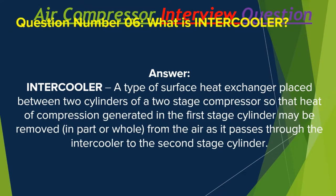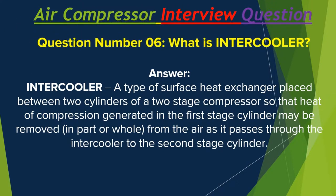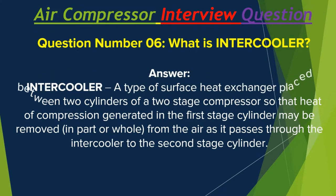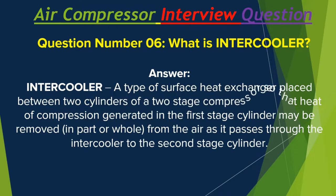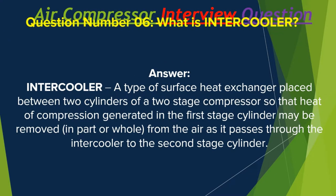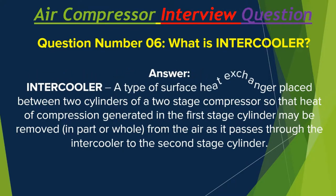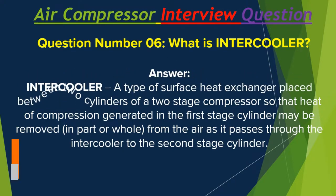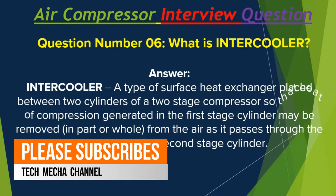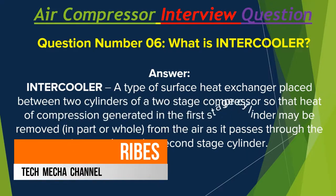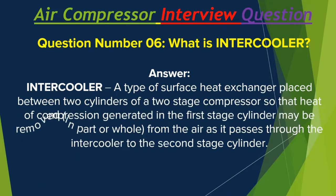Question number 6: What is an intercooler? Intercooler: a type of surface heat exchanger placed between two cylinders of a two-stage compressor so that the heat of compression generated in the first-stage cylinder may be removed, in part or in full, from the air as it passes through the intercooler to the second-stage cylinder.